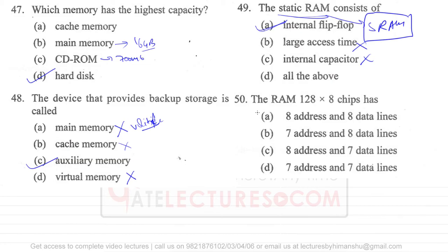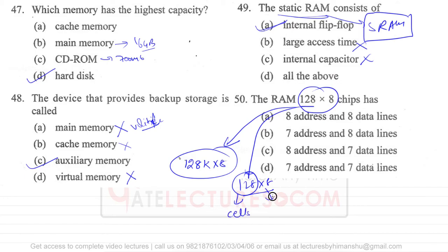Question 50: the RAM 128×8 chip has—generally in this problem they have made a printing or typing mistake. Actually, 128K×8 and 128×8 are different things. When I'm saying 128, these are the number of cells we have. In every cell, these are the number of bits. That means your main memory is divided into 128 cells, and in every cell we are storing 8 bits of information. Because we have 128 cells, to represent the address of each cell we require—128 can be written as 2^7, so log 128 is 7 bits. We require 7 bits of information to represent the addresses.